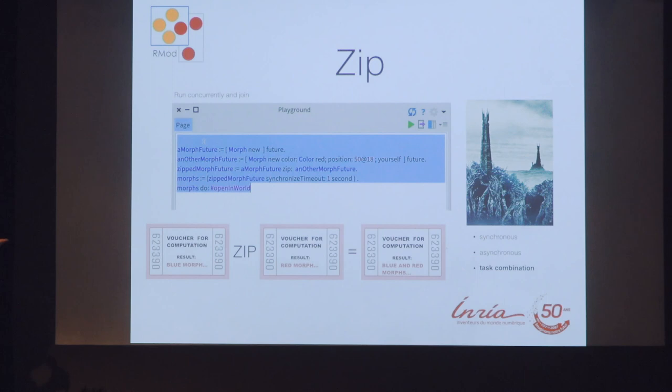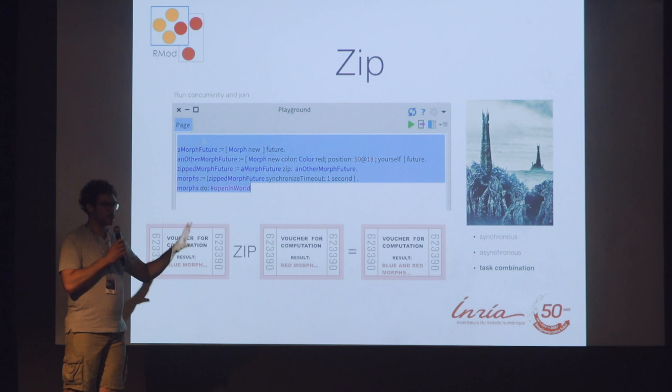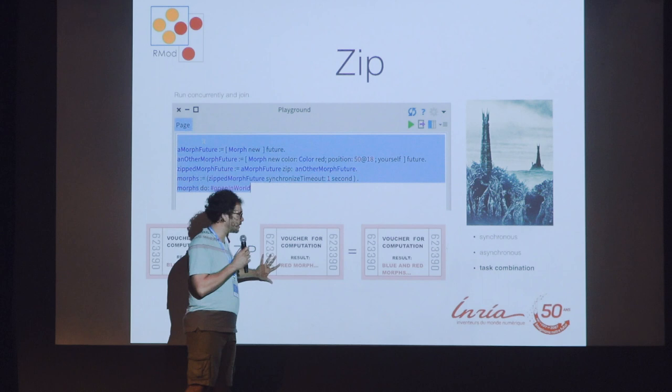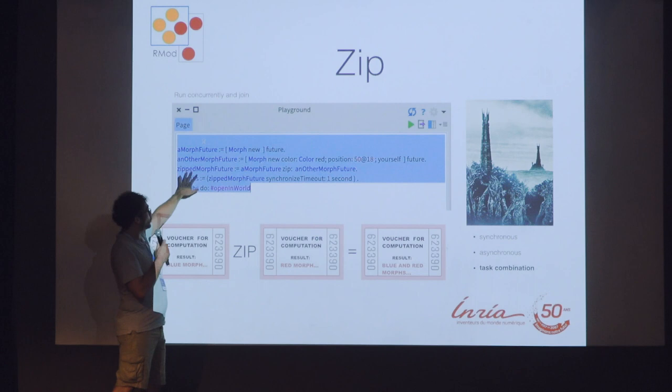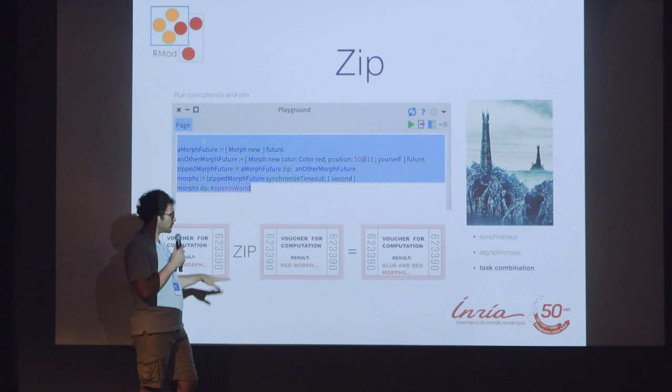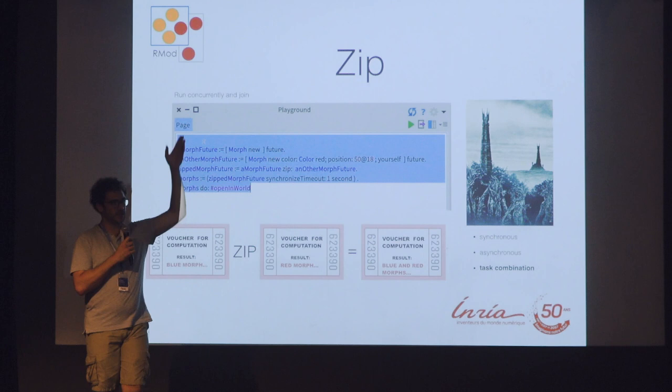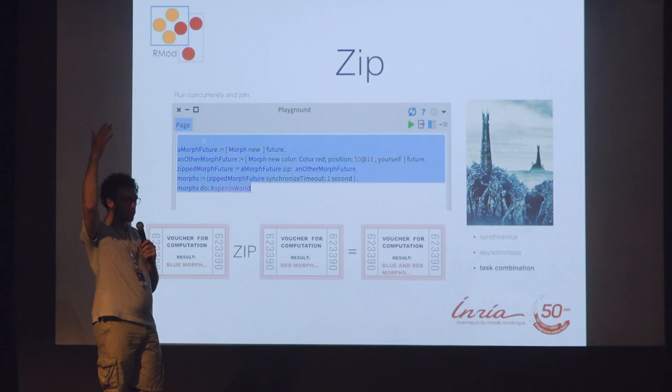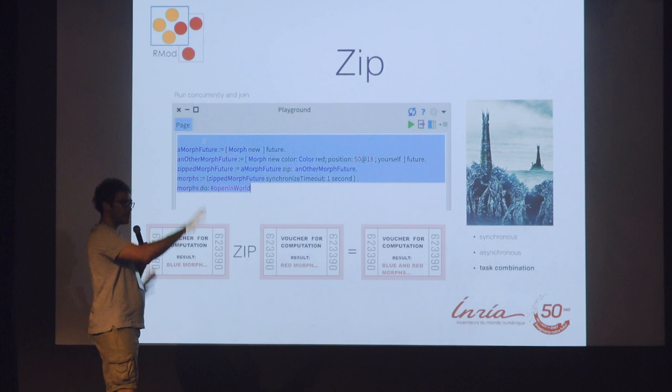Now we have the zip. What zip does is work as a join of two tasks. It's a combinator — we combine two futures and get a third future as a result. This third future will be deployable and its result available once both of the original futures are finished. So we can join different tasks and say: I want all of these tasks to execute concurrently, and I want to execute something else after. For having this join we use what we call zip.